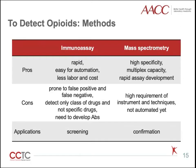The most common methods to detect opiates are immunoassays and mass spectrometry. Immunoassays are methods that use an antigen-antibody reaction to detect drugs. They are usually rapid, easy for automation, and require less labor and cost. However, they are prone to false positives and false negatives, and they cannot distinguish among individual opiates. Therefore, immunoassays are routinely used for initial opiate screening, and positive results are only considered as presumptive positive.